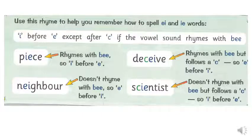So for this lesson today on spelling, we are looking at words spelt with either EI and IE in them. So using the rhyme, there is a famous rhyme to help us that some of you might already know, which is I before E except after C if the vowel sound rhymes with bee.